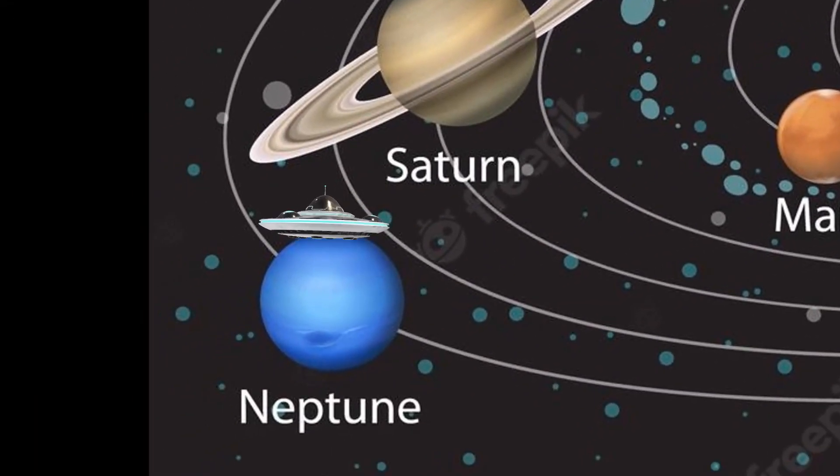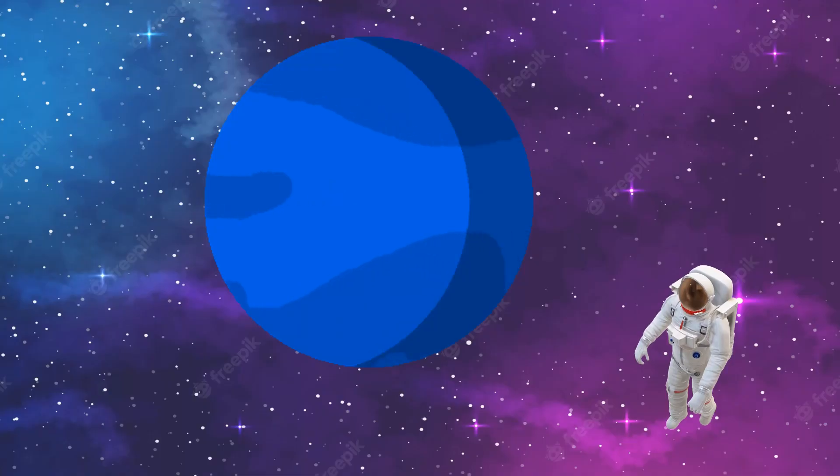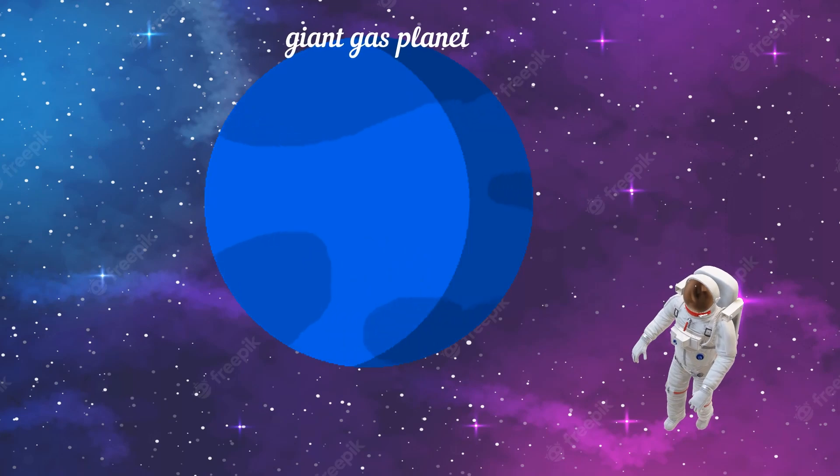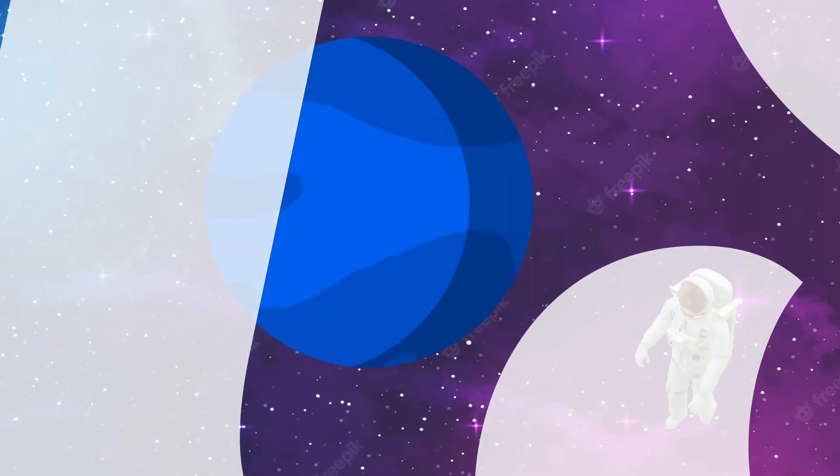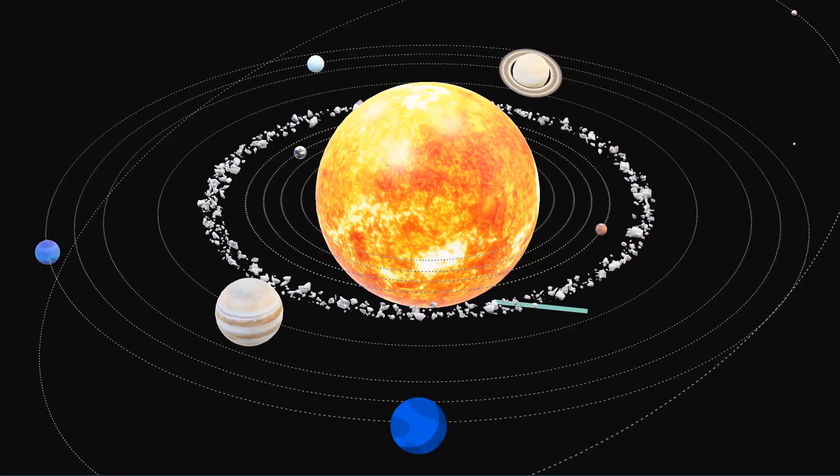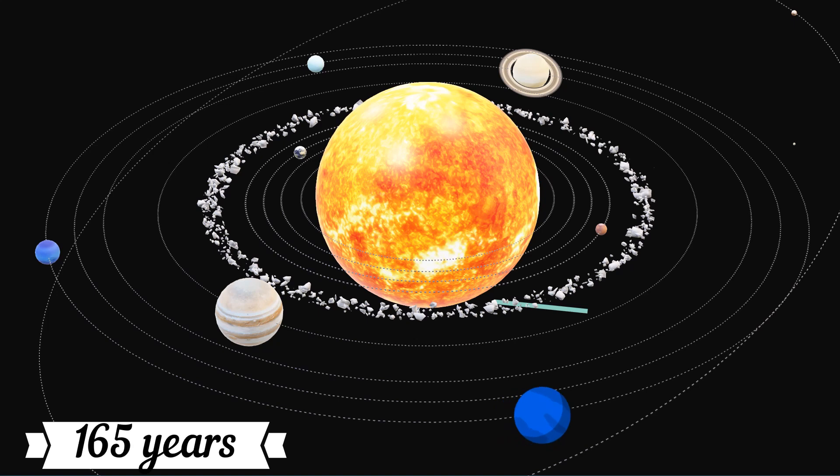Finally, we reach our last destination, the eighth planet from the Sun, Neptune. Neptune is also classified as a giant gas planet. It takes almost 165 years to orbit the Sun.